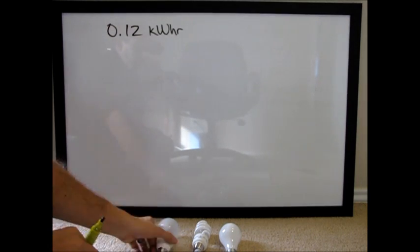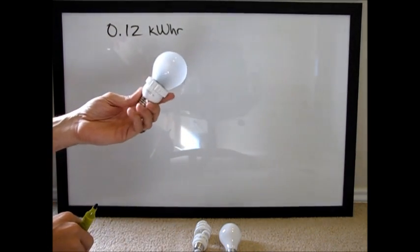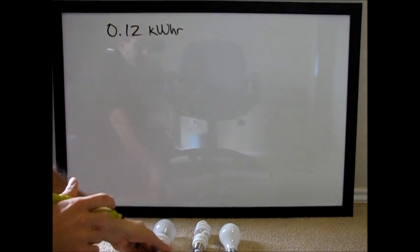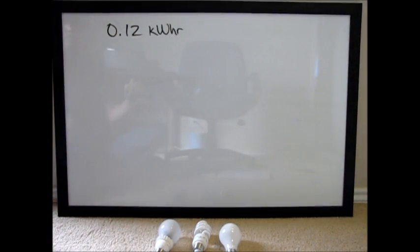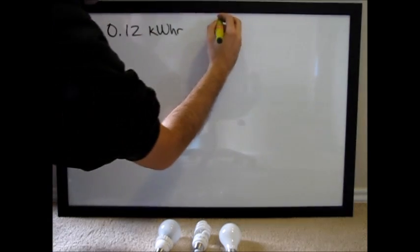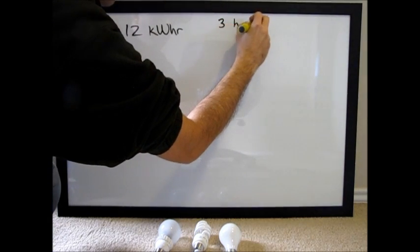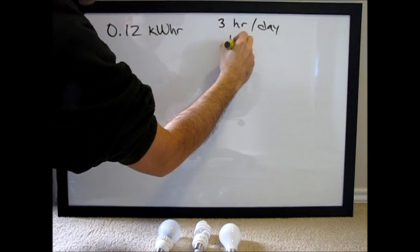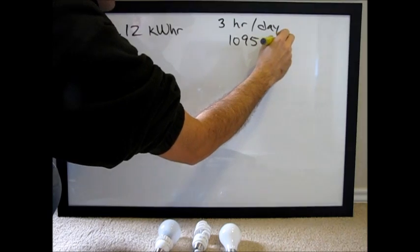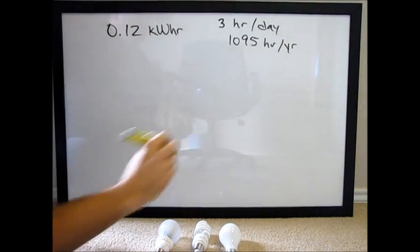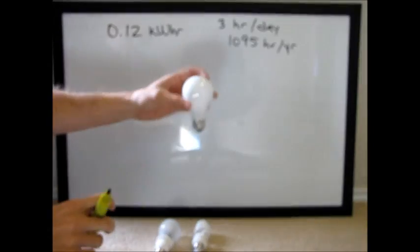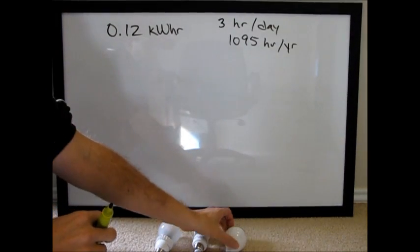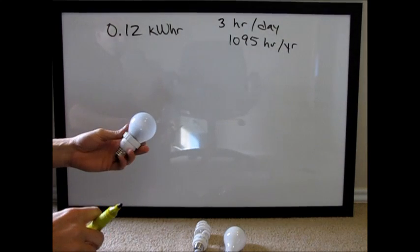Also, the federal government, when they rate the lifetime, the life longevity of these bulbs, they rate it at an average of three hours a day. And that equates to 1095 hours per year. And this normal incandescent bulbs are 1000 hours, so we'll just call it a year. We're giving them a little bit of free time, but let's just call it a year.